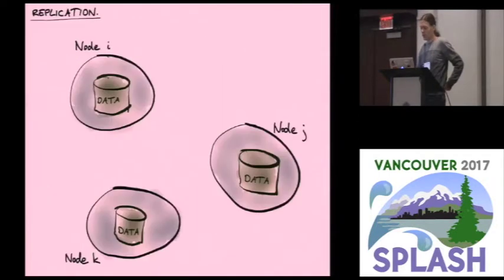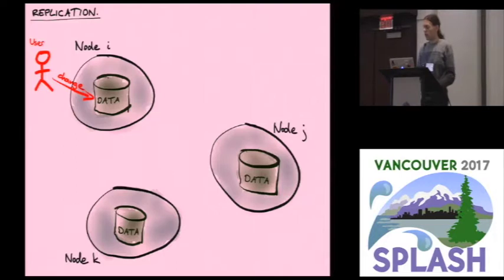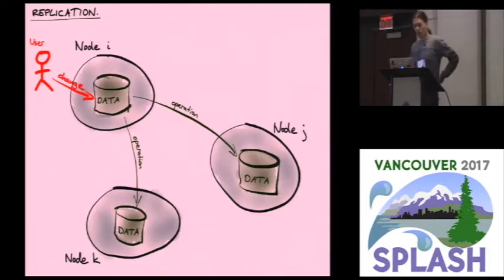The type of systems we're talking about at first glance look similar. We've got several nodes, each of which has some local data stored locally. When users come along and want to change data on one of those nodes, whenever data is changed we need to replicate that data to other copies on other nodes so all nodes have an up-to-date copy.